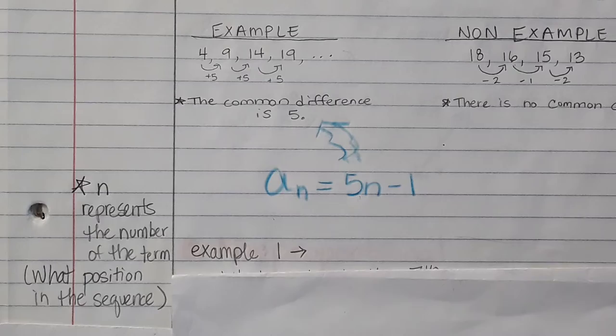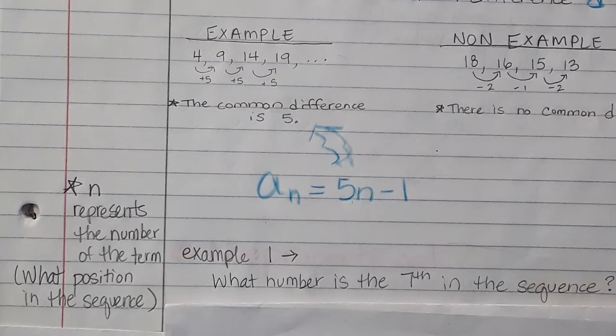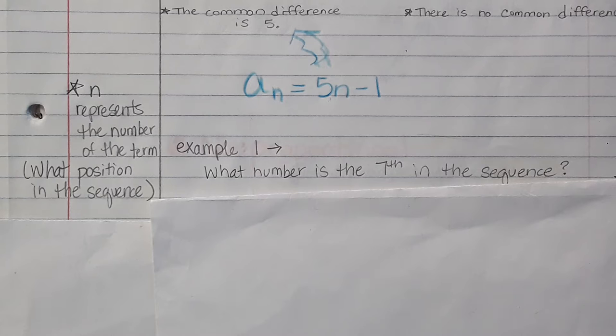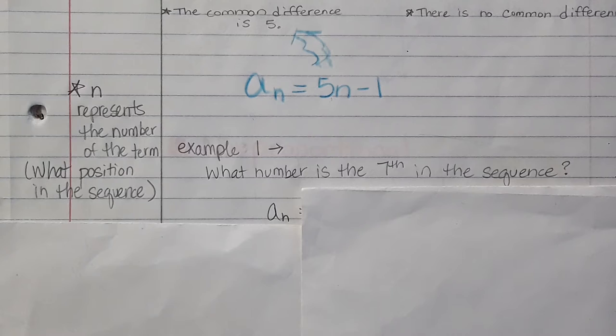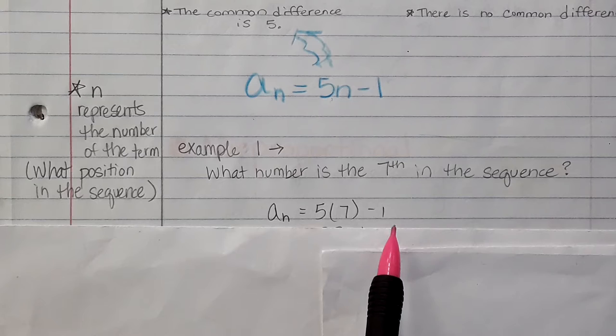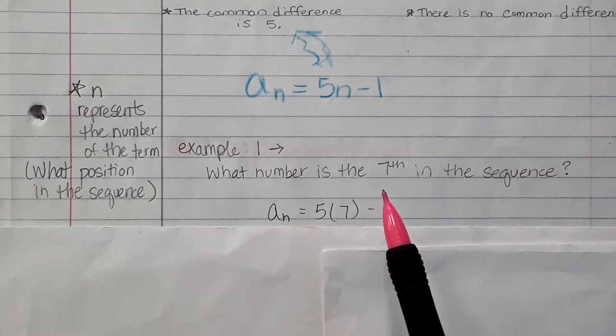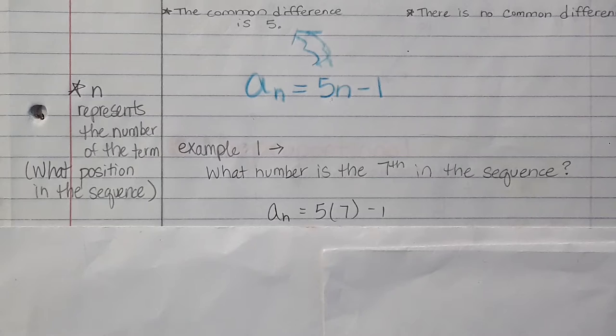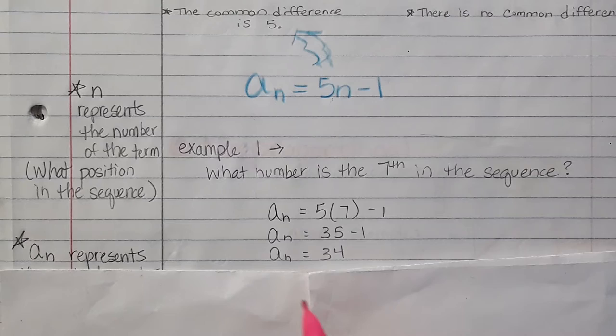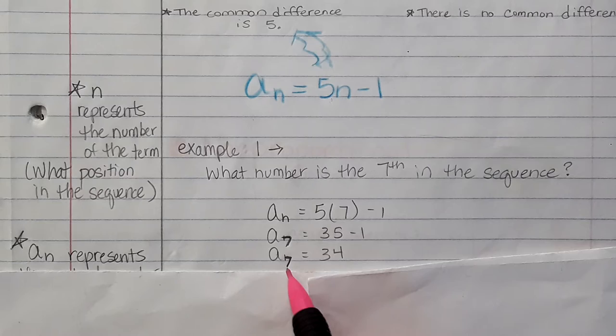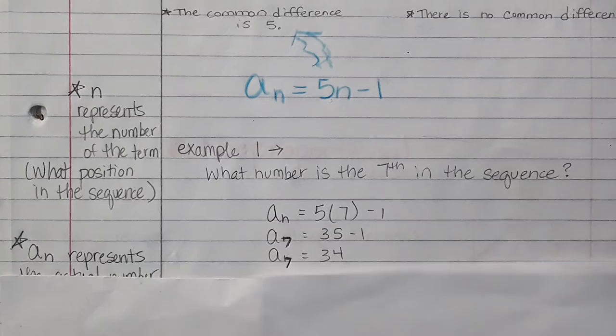If I want to find the 7th number in the sequence, I could use this function to find what the 7th number would be. I'd use my equation, a sub n equals 5n minus 1. Remember, the minus 1 came from the position 0. Since it's the 7th term, I substitute n as 7, I have 5 times 7 minus 1.